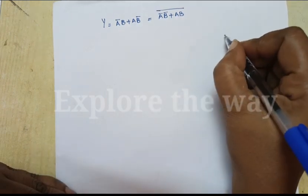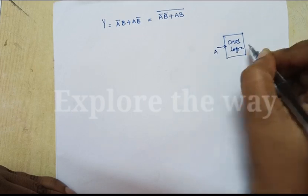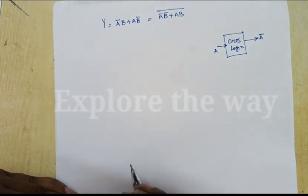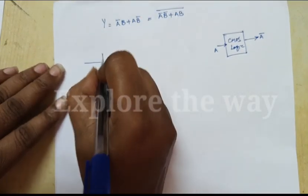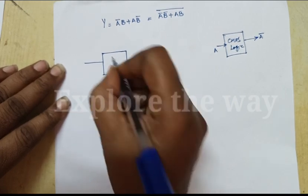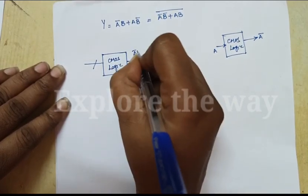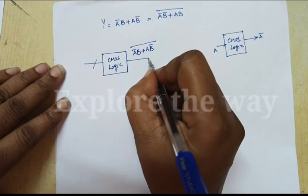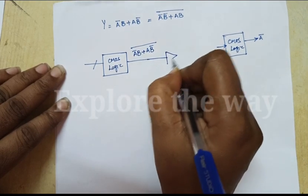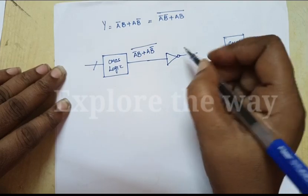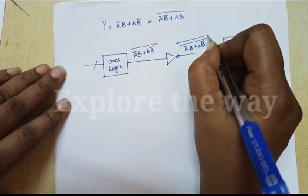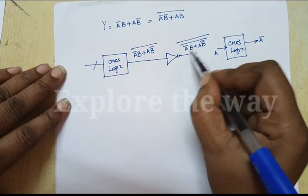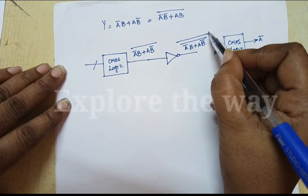Suppose if the input is A, its output is A̅ — the complement of the input. So if I implement this equation, then the CMOS logic produces the complement of it. At the output we need to use one more inverter to get the actual output, which then produces the complement of this input — which is equal to the XOR function complement, whole complement.